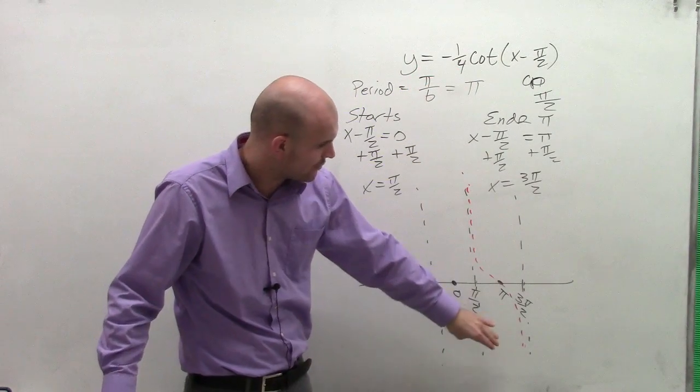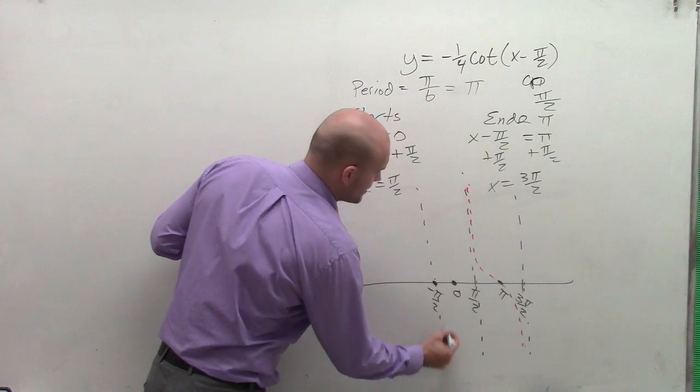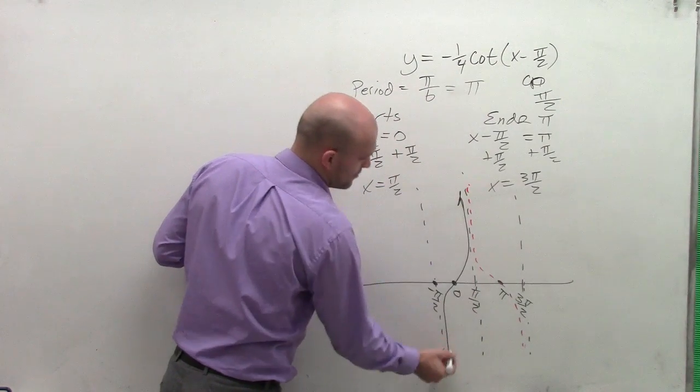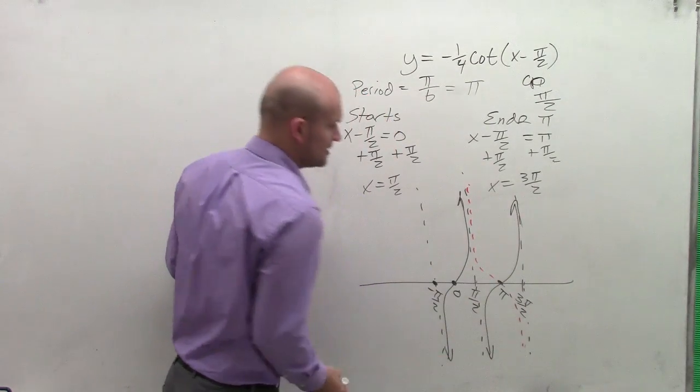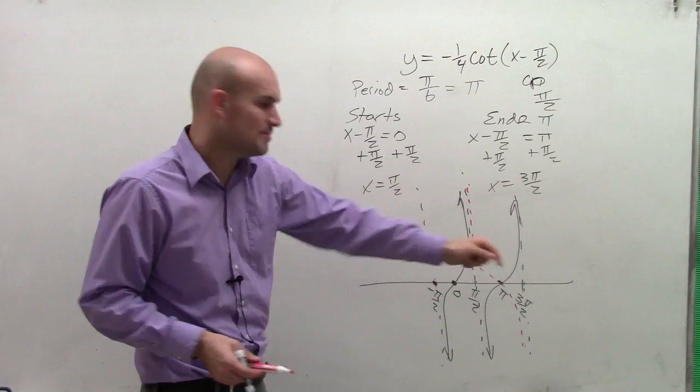Therefore, this graph is now going to be reflected over. So my cotangent graph is now going to take more of a shape like a tangent function in this direction. So you're just going to take it originally and then flip it over.